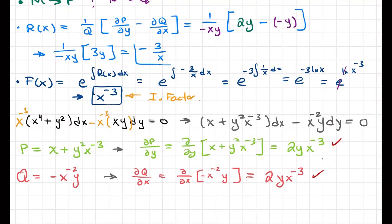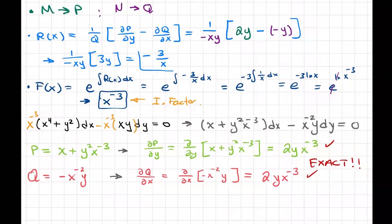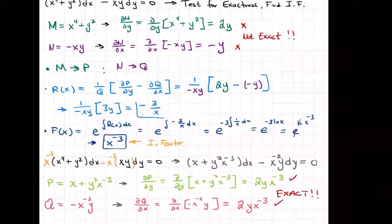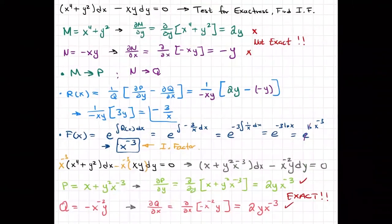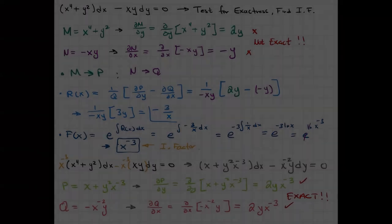Both partial derivatives are equal, so the equation is now exact. As you can see in these examples, testing for exactness and applying an integrating factor is not difficult at all. This is basically where we would stop. That is it, and as always, good luck.